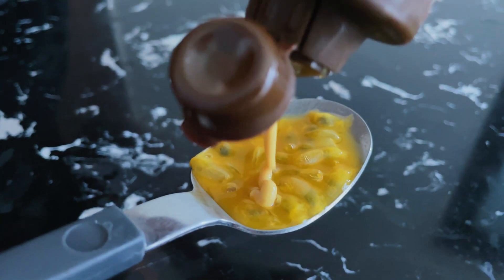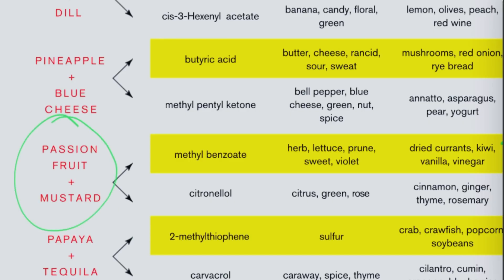What is flavor pairing theory or flavor pairing? All foods are made up of compounds, and the idea is that when these different foods share compounds — or flavor compounds — they pair well together. As an example, passion fruit and mustard share common compounds: methylbenzoate and citronellol. So the more compounds they have in common, the more probability that it's a good pairing.